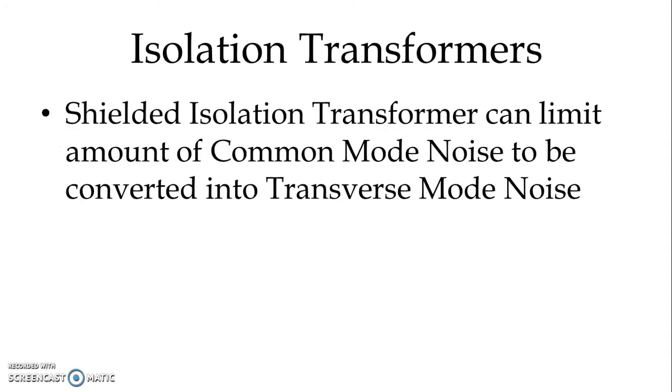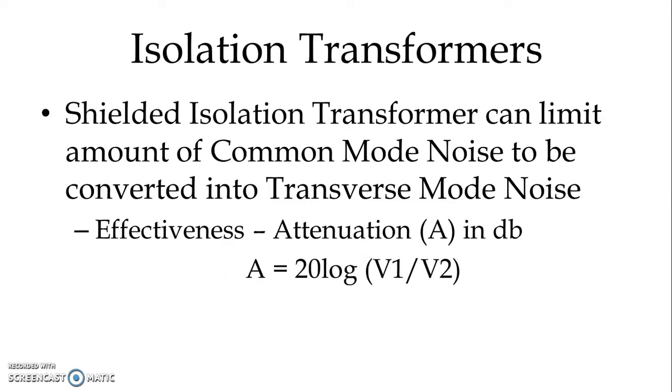Shielded isolation transformers can limit the amount of common mode noise to be converted into transverse mode noise. The effectiveness with which a transformer limits common mode noise is called attenuation and it is indicated in decibels. We can write A = 20log(V1/V2), where V1 is the common mode noise voltage at the transformer primary and V2 is the differential mode noise at the transformer secondary.